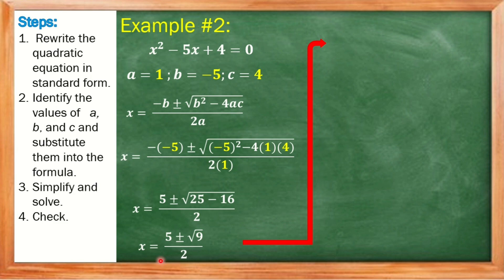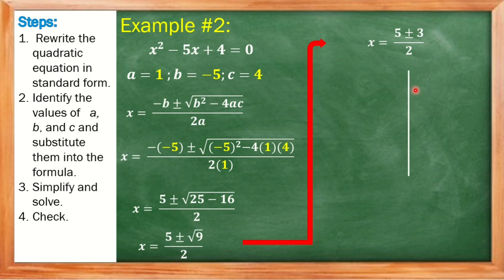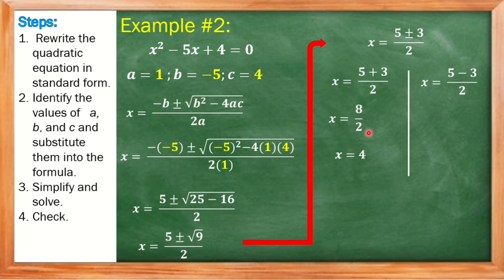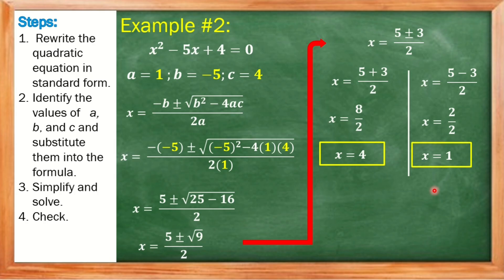We separate the two solutions. First: X equals 5 plus 3, divided by 2. That gives 8 over 2, which equals 4 — our first solution. Second: X equals 5 minus 3, divided by 2. That gives 2 over 2, which equals positive 1 — our second solution.